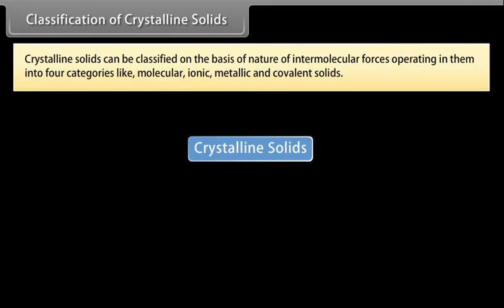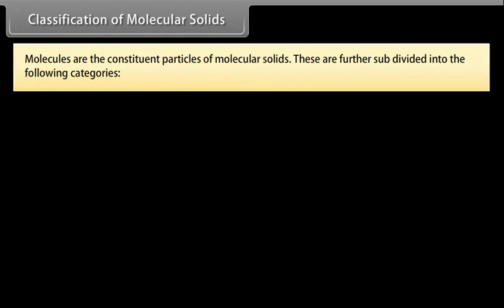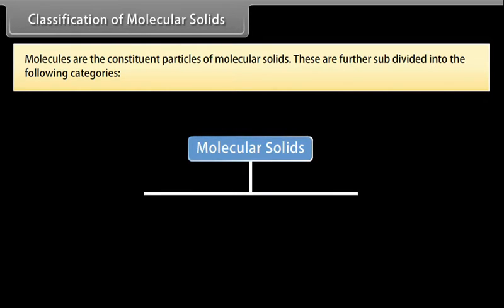Crystalline solids can be classified on the basis of nature of intermolecular forces operating in them into four categories: molecular, ionic, metallic and covalent solids. Molecules are the constituent particles of molecular solids. These are further subdivided into the following categories.